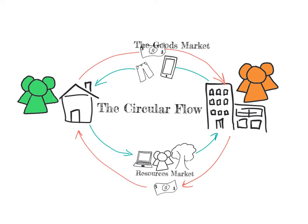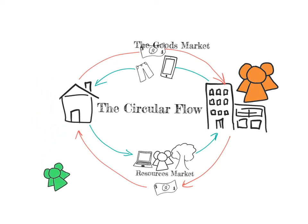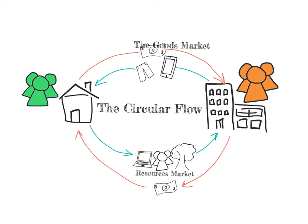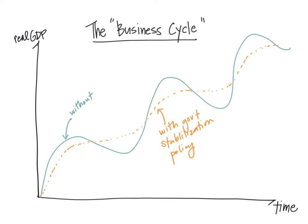So if one side of the economy is falling off a cliff and starting to wreck the circular flow, the federal government and the Federal Reserve — through stabilization policy, both fiscal and monetary — can prop it back up, even out the bumps of the business cycle, and get the economy back to success. The idea is that, if practiced and implemented correctly, the economy will be more stable with government intervention than without.